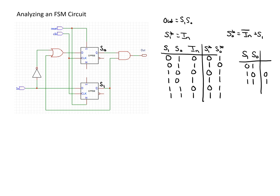Now we want to create a state transition diagram. I'll give these states abstract names: I'm going to call the 0,1 state S0, the 1,0 state S1, and the 1,1 state S2. Looking at the next states in the table, the transitions are: S0, S1, S0, S2, S0, and S2. We can now use this data to draw the state transition diagram.